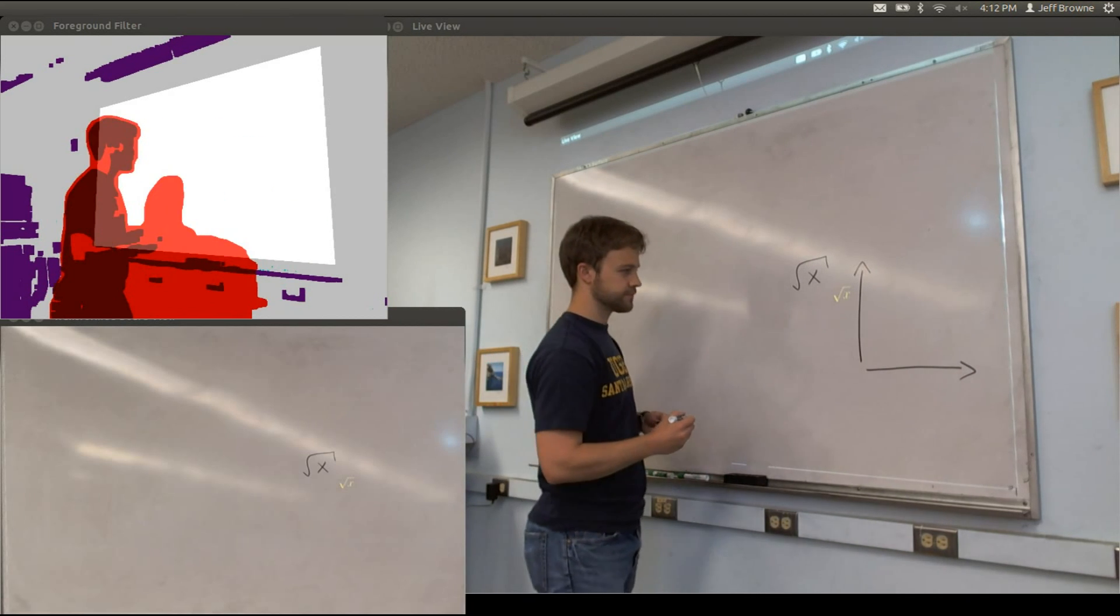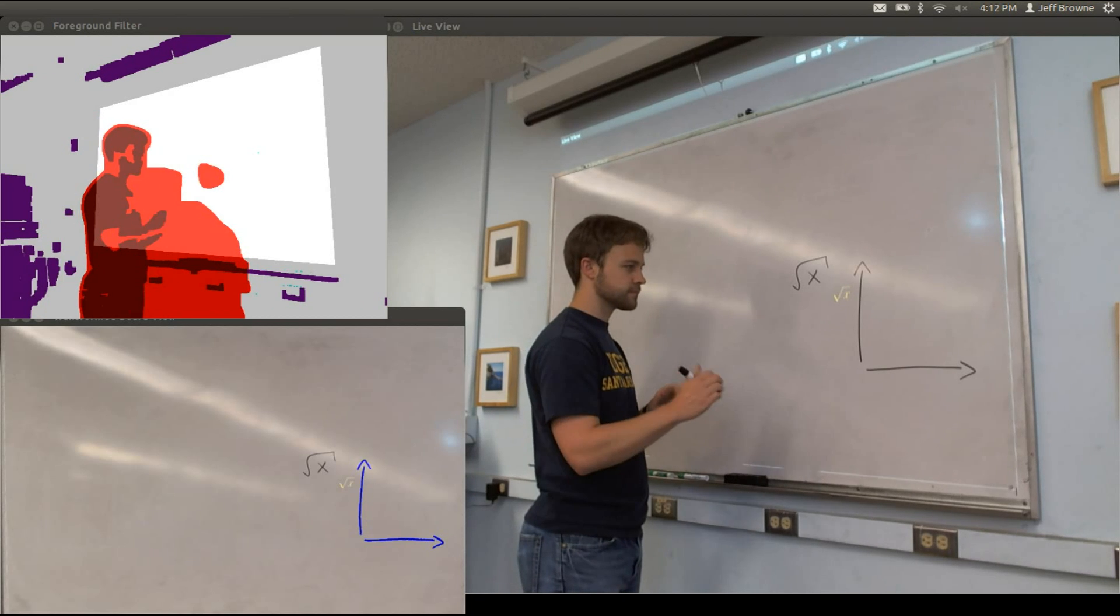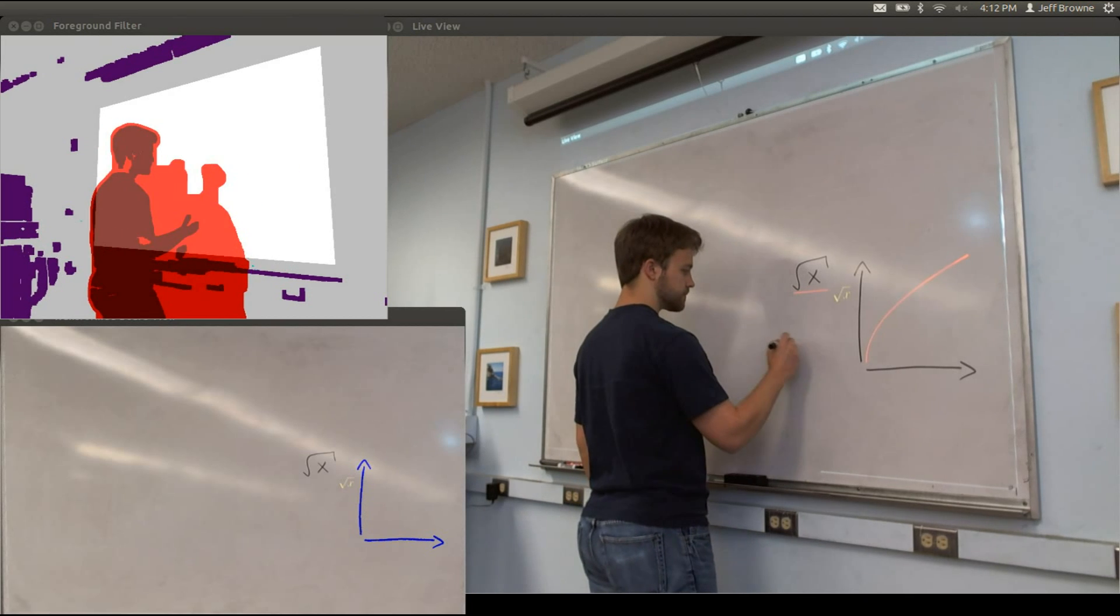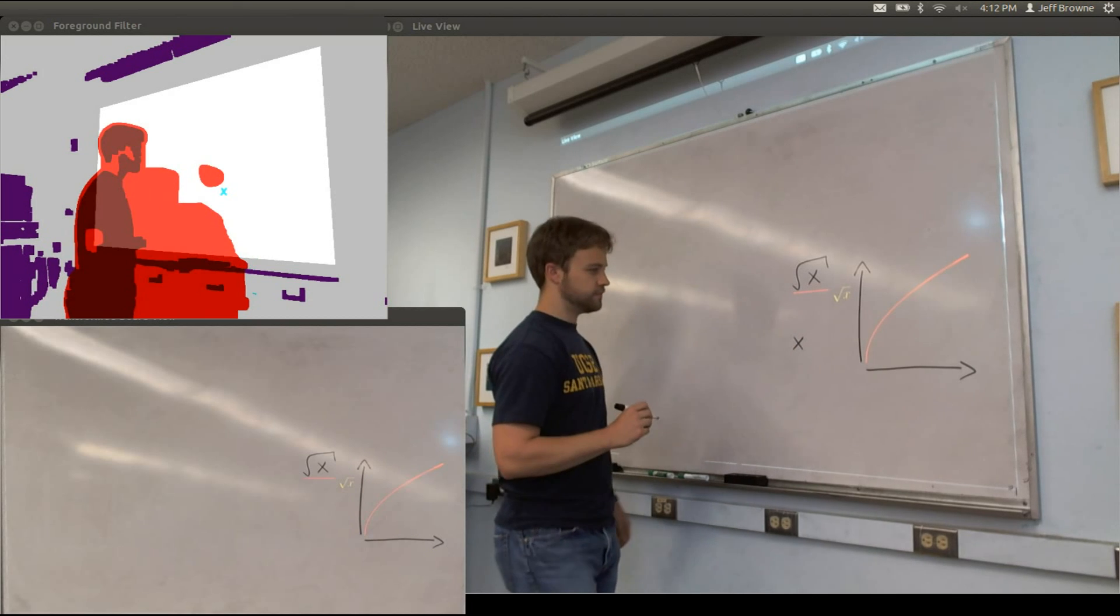At bottom left, you can see the system's model of the whiteboard's contents. New ink is progressively incorporated into the model as it becomes visible, which is emphasized here as strokes that have a blue highlight. This model is updated live, despite foreground objects frequently occluding the view of the whiteboard.